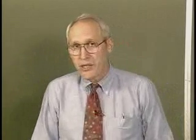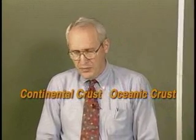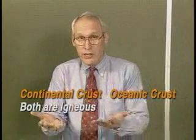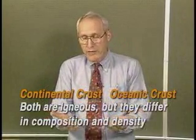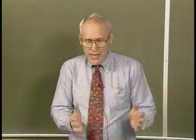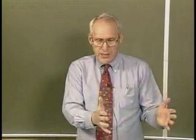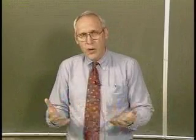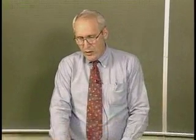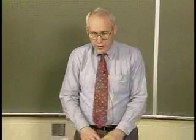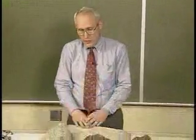One of the puzzles of planet Earth is the composition of the crust. There are in fact two kinds of crust: oceanic crust, which underlies the oceans of the world, and continental crust. Both are igneous in origin — fire-formed rocks — and yet they differ in their composition, the kinds of minerals they're made of, and their density. They also differ in age. The basic underlying rock of the continents is much older than the rock of the oceanic crust, and yet they sit side by side on the surface of the Earth. That's the puzzle.